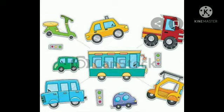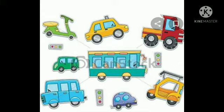Now let us learn about the vehicles used in each type — land transport, air transport, and water transport. For land transport, first it is roadways. For roadways, we use vehicles such as bicycles, scooters, auto rickshaws, cars, buses, trucks, and so on. All these vehicles need roads to run. Buses pick and drop people at the bus stop or bus station.